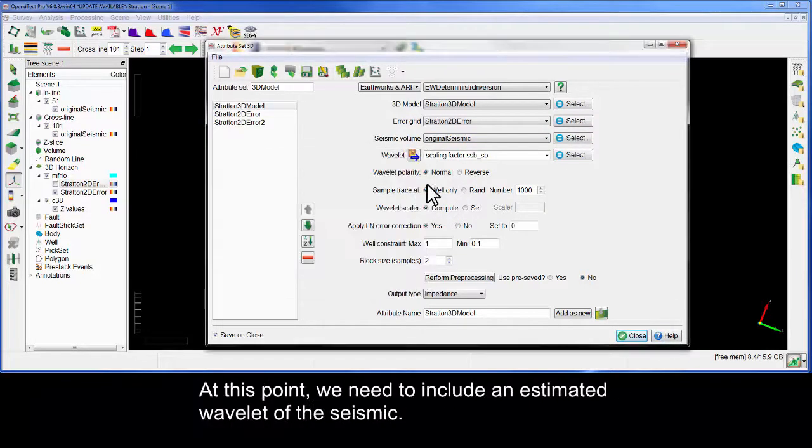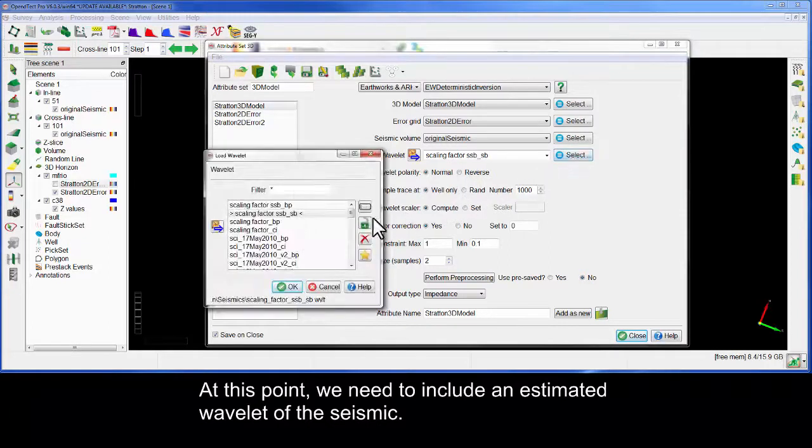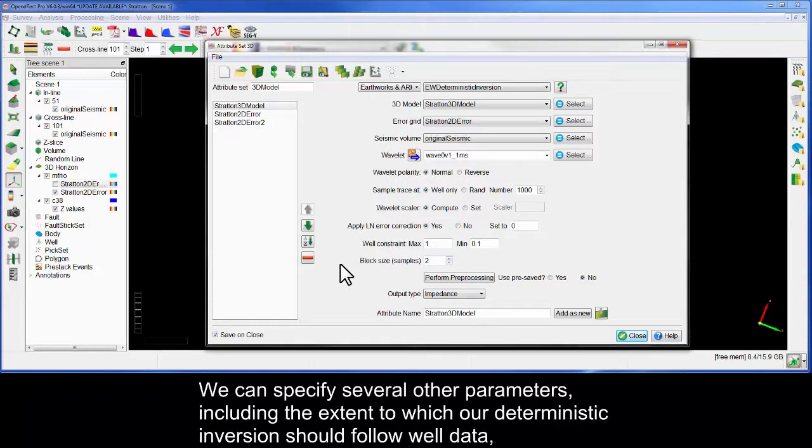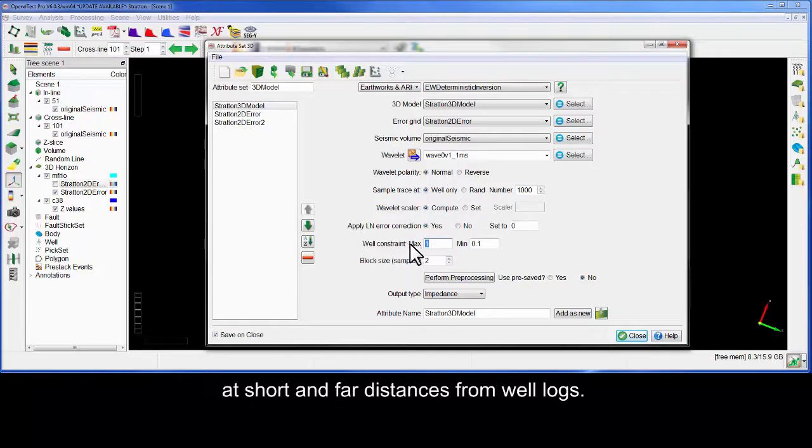At this point, we need to include an estimated wavelet of the seismic. We can specify several other parameters, including the extent to which our deterministic inversion should follow well data, at short and far distances from well logs.